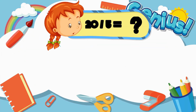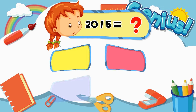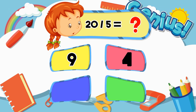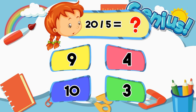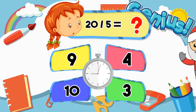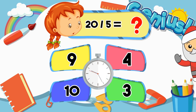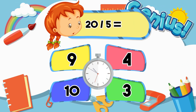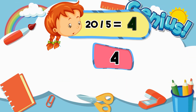What is twenty divided by five? Options: Nine, Four, Ten, Three. Answer: Four.